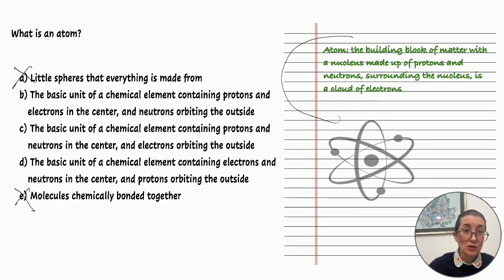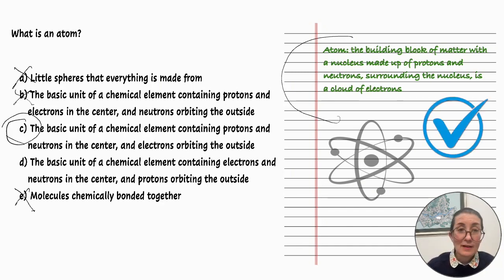So let's go to B: chemical element containing protons and electrons, so that's not correct. C: chemical element containing protons and neutrons, so far that's good. Surrounding the nucleus is a cloud of electrons and we've got electrons orbiting the outside. So that is our correct answer.